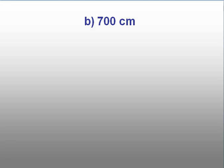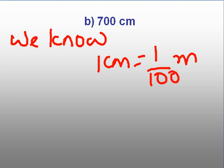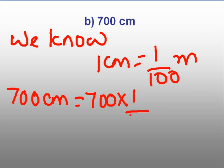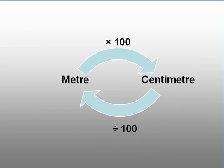Let us do one more question. Convert 700 centimeters into meters. We know 1 centimeter is equal to 1 by 100 meter. So 700 centimeters will be equal to 700 into 1 by 100, that is 700 by 100 meters, which equals 7 meters. I think you have understood this concept of how to convert meter into centimeter and back.